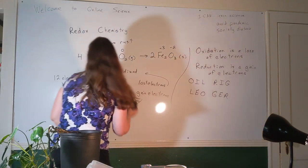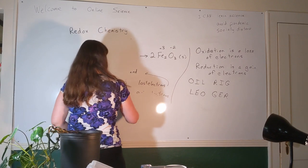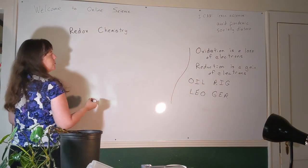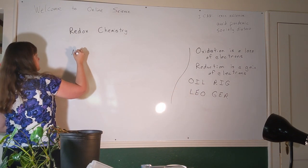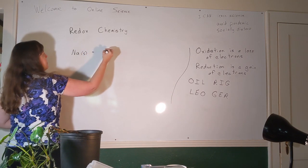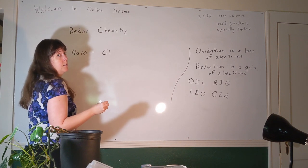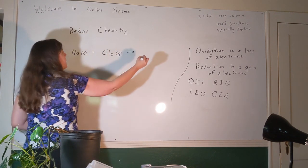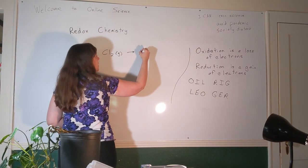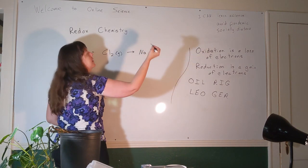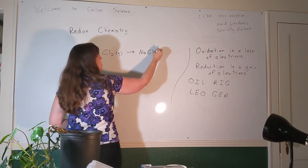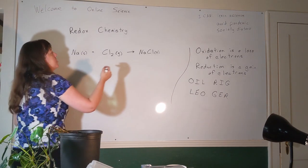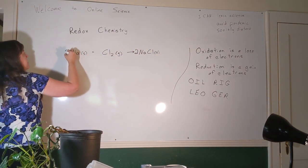Let's try another reaction — let's make table salt, sodium chloride. We start with sodium in its elemental form, which is a solid. Chlorine's elemental form is a diatomic gas. They combine to make sodium chloride. Sodium's common charge is +1, and chlorine's common charge as chloride is −1, so they combine one-to-one as NaCl, which is a solid. The reaction is not balanced — we have two chlorines on the left and one on the right, so we put a 2 in front of NaCl and a 2 in front of sodium.